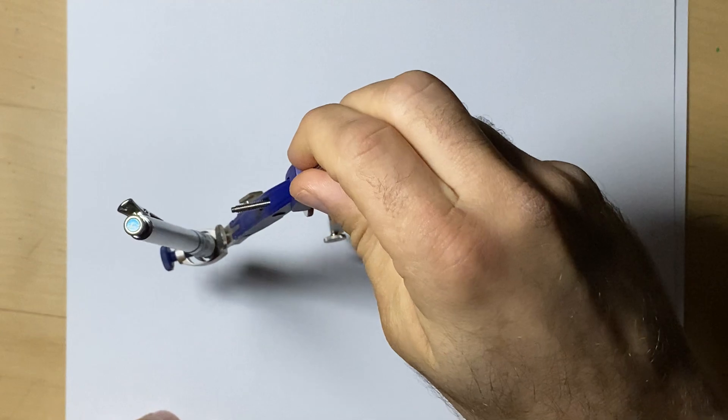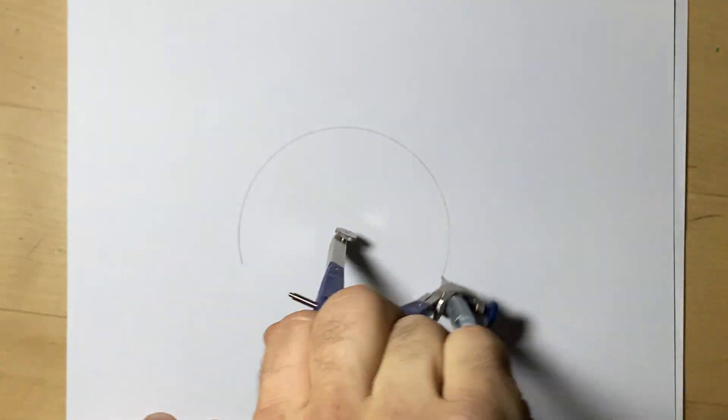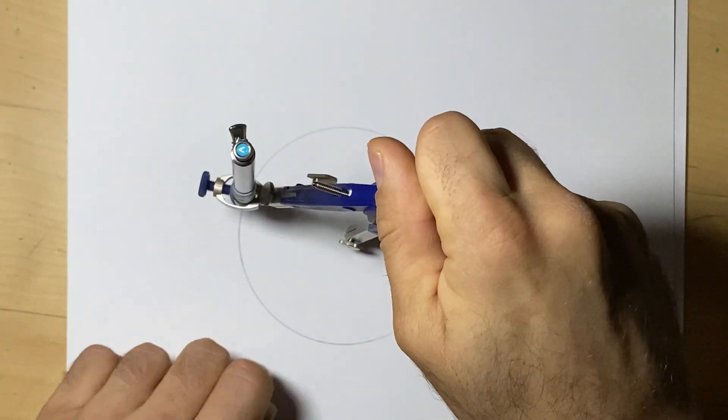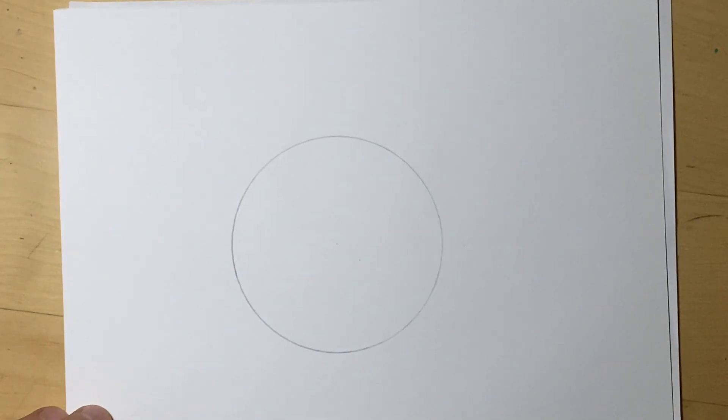Today we want to draw a square, which is actually the first step in making an eight-sided star. But for now, we'll just look at how to draw a square using a circle. The first thing you'll do is draw a circle, and you want to make sure you push down on it enough so you can see the center.